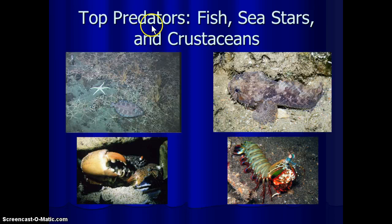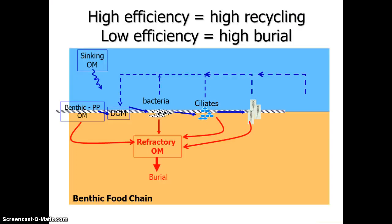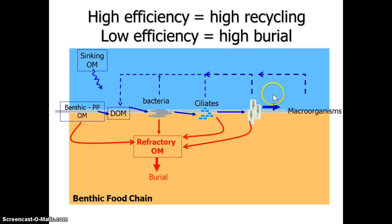The next level up are the top predators: larger fish, sea stars, and crustaceans. They go around eating the deposit feeders and filter feeders. They all add to the efficiency and biogeochemical cycling of benthic organic matter. Whatever doesn't get used and recycled gets buried. Adding the macro organisms — all the filter feeders, deposit feeders, and top predators — they either consume each other or consume organisms further down the chain. When they do, they respire, excrete, or die and decompose, adding to recycling. Whatever is not recycled is removed through burial, and once buried, it's organic matter removed for hundreds of thousands of years — removed from biogeochemical cycling.